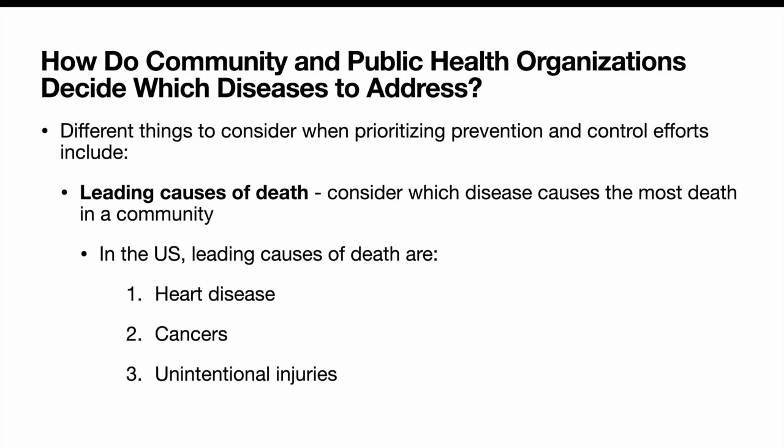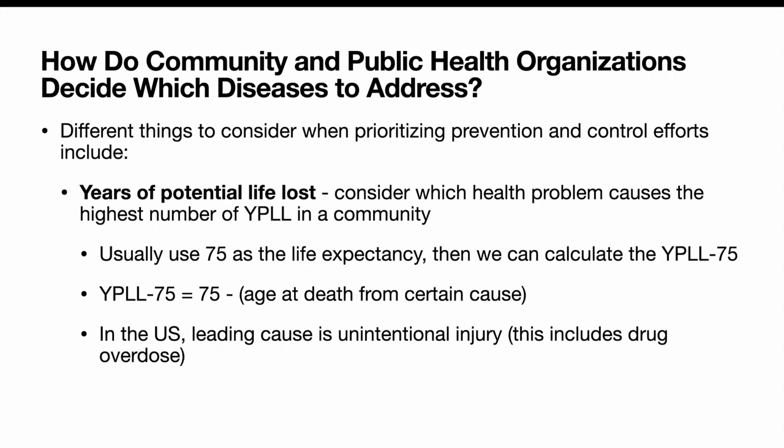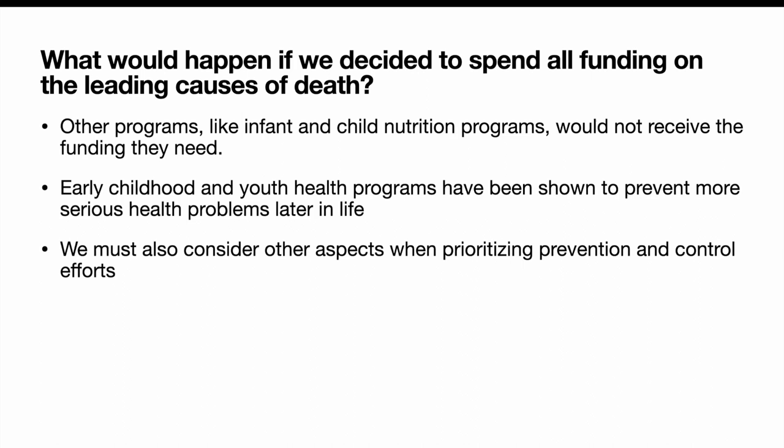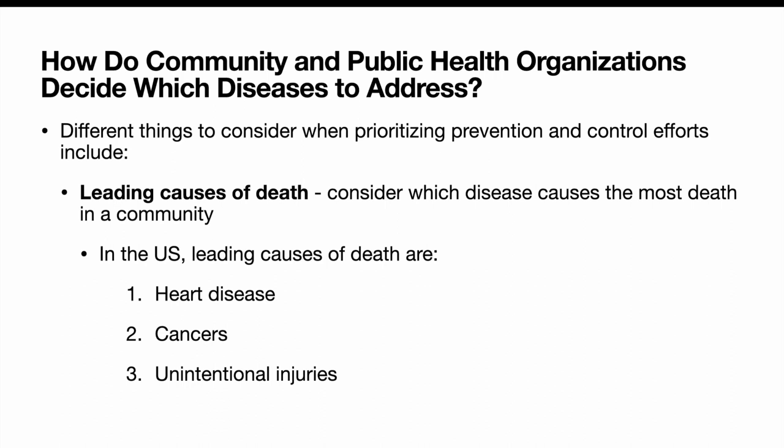When we are part of a community and public health organization, how do we decide which diseases to address? There are many diseases out there and we want to put resources into something, but how do we decide? There are different things to consider when prioritizing prevention and control efforts, including leading causes of death, years of potential life lost, and economic cost to society. Looking at leading causes of death: in the U.S., those are heart disease, cancers, and unintentional injuries, so we might put most resources toward preventing those.